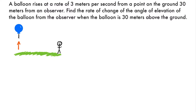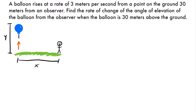We know that the balloon is rising from a point on the ground 30 meters from the observer, so we have a horizontal measurement from the balloon's base to the observer, which I'm going to label as x. We also know we're going to have a measurement from the balloon to the ground, so I'm going to label that with y. These two variables make the most sense if you think about this as one of the quadrants of a coordinate plane — we have our x-axis and our y-axis.